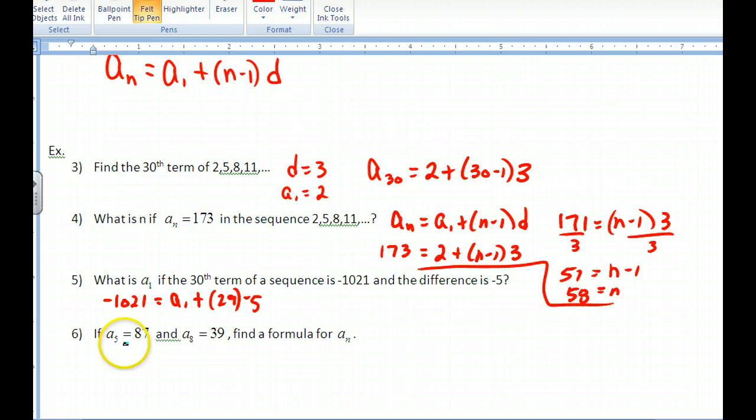And then if a sub 5, here's the next example, a sub 5 is equal to 87, and a sub 8 is equal to 39. Find the formula for a sub n. If you realize we're going up by the same amount each time, for every 1 over we go up by the same amount, or 1 over we go down by the same amount. So it's very much like a linear equation. So what you could do is find the slope. And if you find the slope of this thing, then that would give you your common difference. So if I go 87 minus 39 over 5 minus 8, this would give me negative 16. So my common difference would be negative 16.